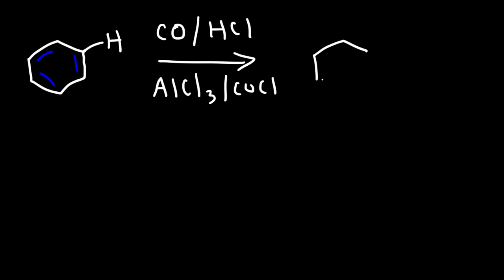And the reagents that are part of this reaction include carbon monoxide, hydrochloric acid, aluminum chloride, and copper chloride. And so the end result is that you're replacing a hydrogen atom with an aldehyde functional group, giving you benzaldehyde as the final product. So that's an overview of the Gattermann-Koch formylation reaction.